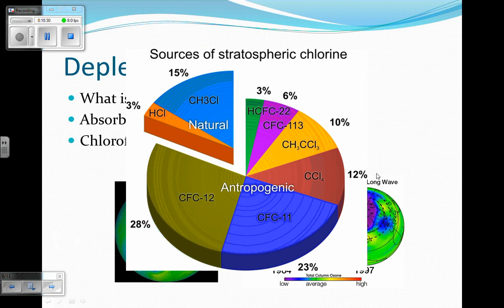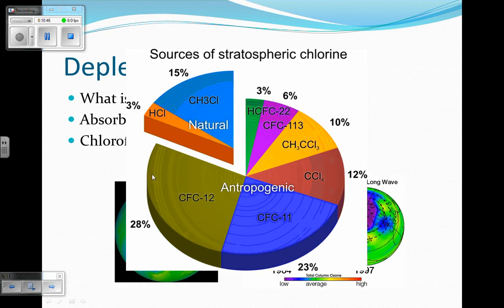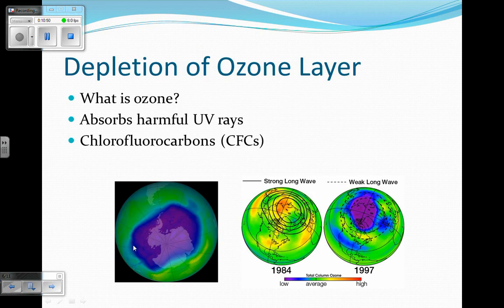Here are the sources of chlorine in the atmosphere. About 18% are natural sources of chlorine — things we are not doing. But here we have anthropogenic sources, which means man-made. Anthropogenic sources of chlorine take up all of the rest of the atmosphere. So the depletion of the ozone layer is causing ultraviolet rays to reach the surface and cause damage.